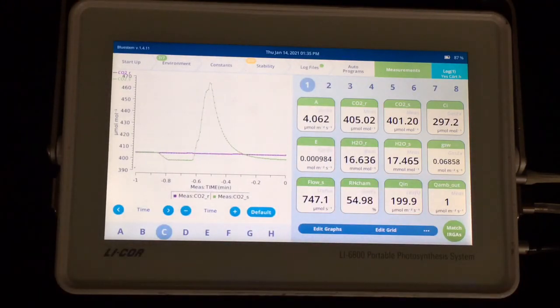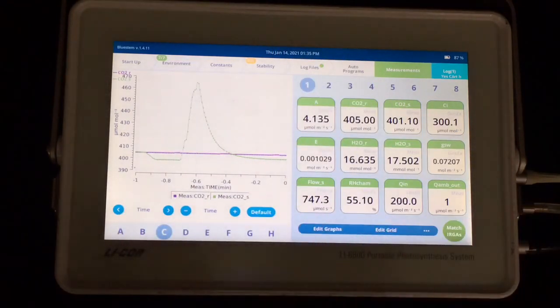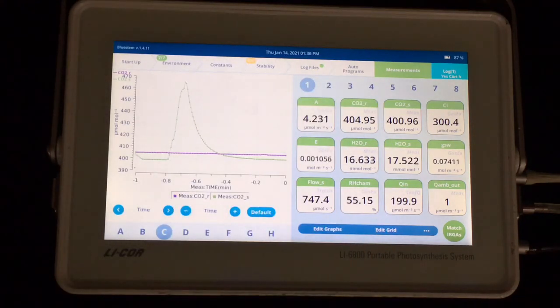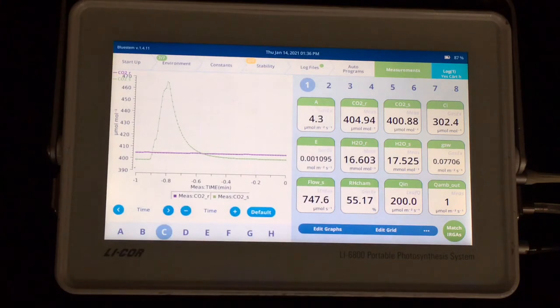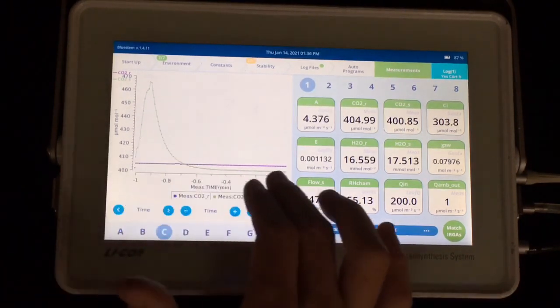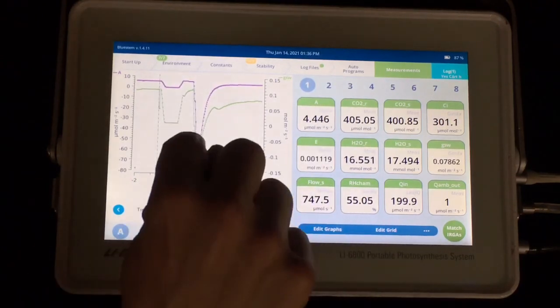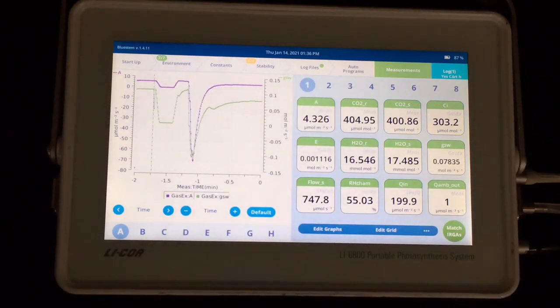And you can decide to log based on a number. You can watch these graphs and see when things look stable. You can use stability criteria which can be very helpful. And objectively decide when the slope or rate of change of these variables. Whichever variables you find most useful. Gets below a threshold you can use that to log. So a lot of people will look at CO2 graphs. Or again you can watch the graph of assimilation. And you can see that in this purple line here. Is now rest stable and I would be ready to log that data point.